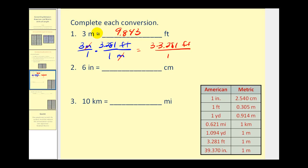And we should change this to an approximate symbol. On number two, we want to convert six inches to centimeters, so we'll write six inches over one. We'll go to the table and see if we can find a unit fraction to convert inches to centimeters. This first row states that one inch is equal to two point five four centimeters.